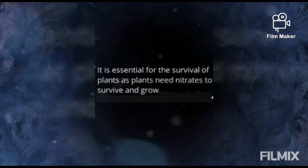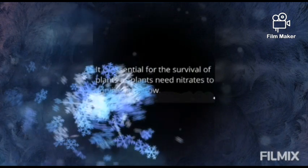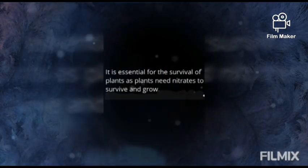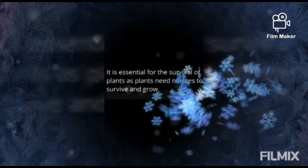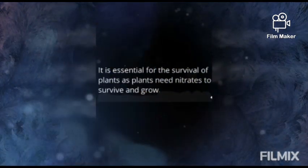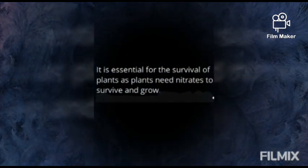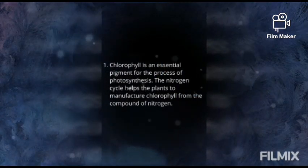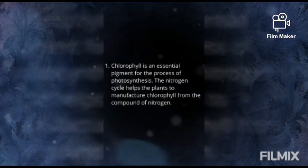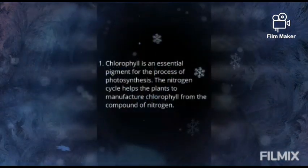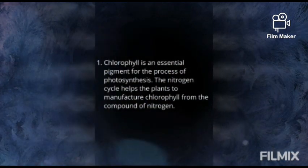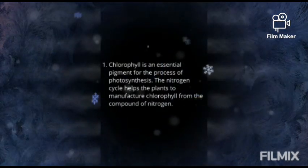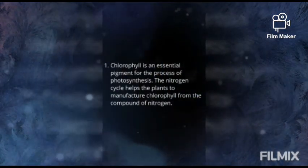It is essential for the survival of plants, as plants need nitrates to survive and grow. Chlorophyll is an essential pigment for the process of photosynthesis, and the nitrogen cycle helps plants manufacture chlorophyll from nitrogen compounds.